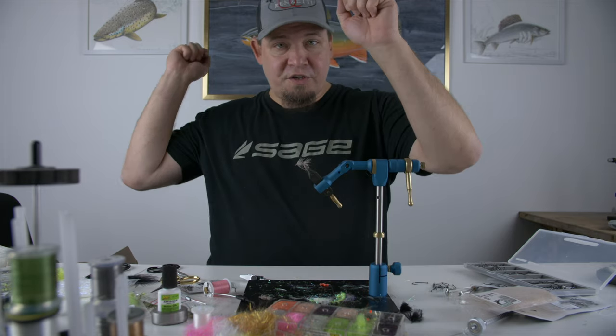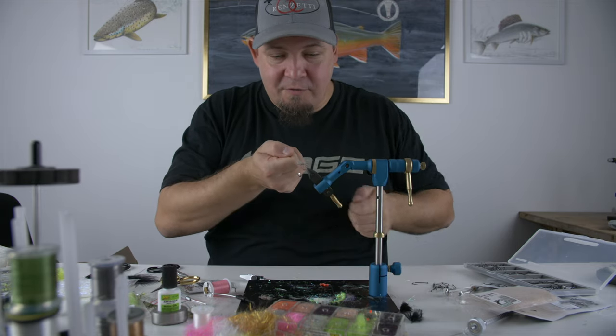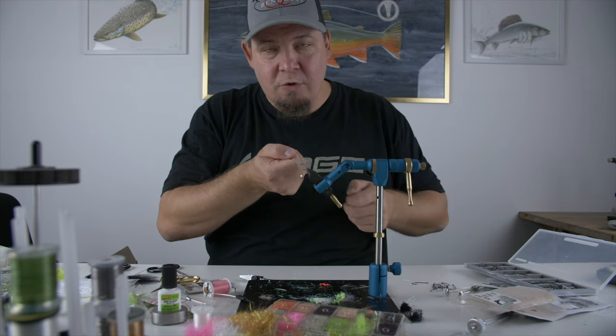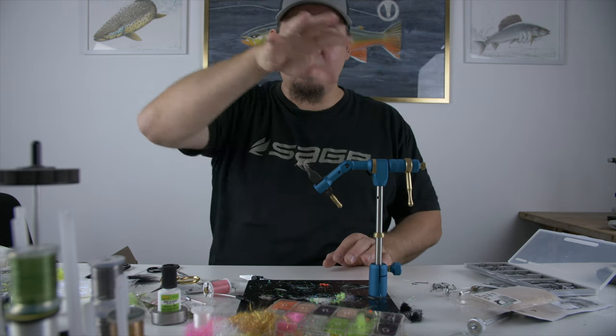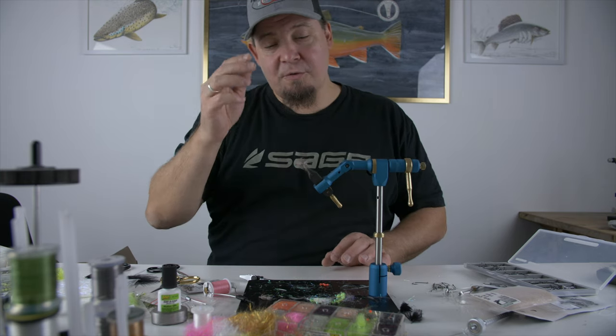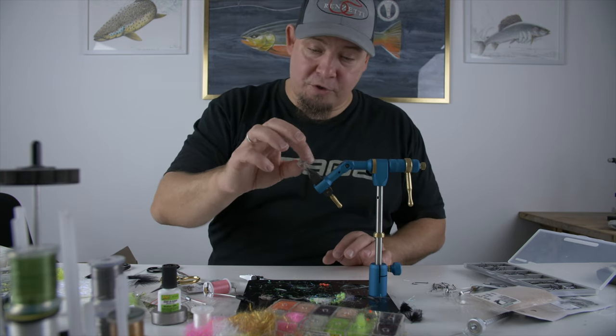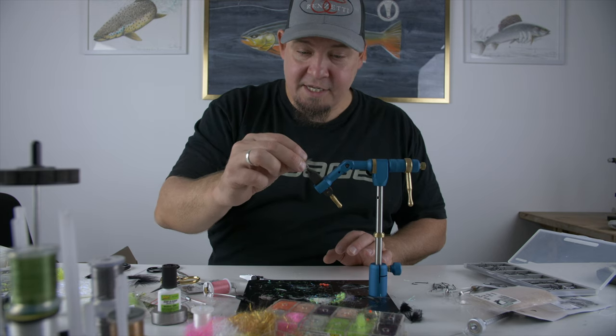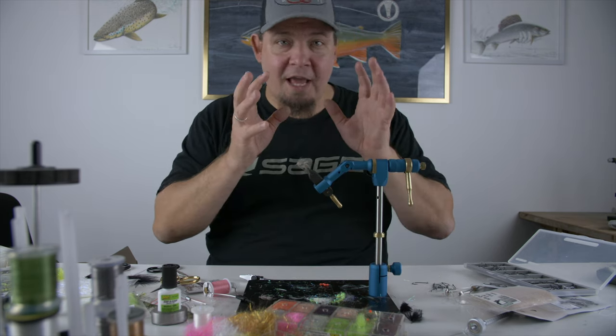The way you fish this is to cast it out and then retrieve it really slowly so it's basically just hovering in the waves and the trout cannot resist this fly. It will be great as well for still water fishing in lakes because this basically can look like anything.